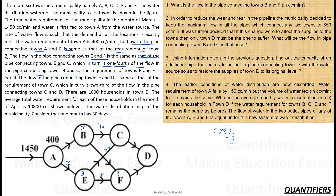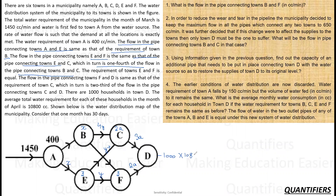I don't want to introduce decimals or fractions, so I will assume that CD equals 3a. That is also equal to the requirement of town C. The last constraint given is that there are 1000 households in town D, and the average total requirement of each household is 10,800 cc. The average requirement per month needs to be converted to cc per minute.